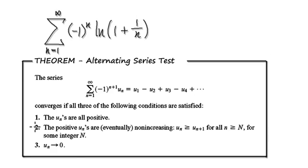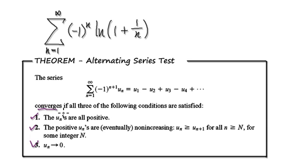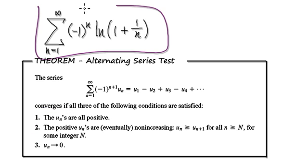So with the alternating series test, if all three conditions have been met, then you can conclude that it's going to converge. It will converge. So in our case, our series here will converge.